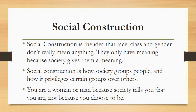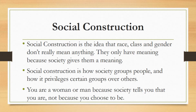First of all, what do we mean by the term social construction? Social construction is the idea that race, class and gender don't really mean anything inherently. They only have meaning because society gives them a meaning. Social construction is how society groups people and how it privileges certain groups over others. For example, you are a woman or man because society tells you that you are, not because you choose to be — just like it tells you what race you are classified as and what social class you belong in. It is a social process that makes us differentiate between what is normal and what is not normal.